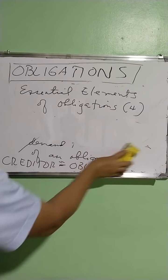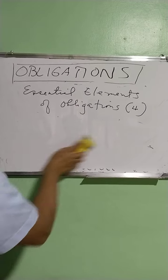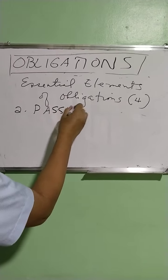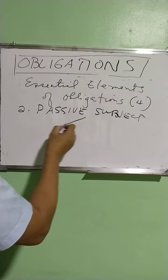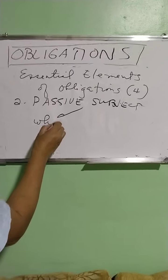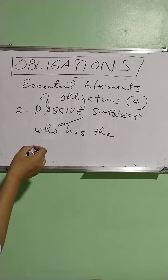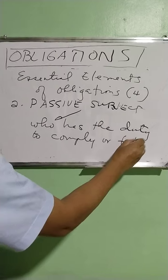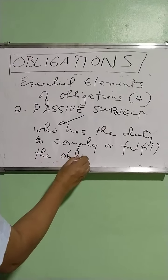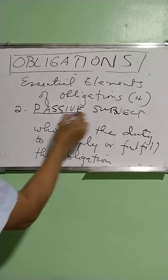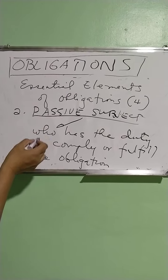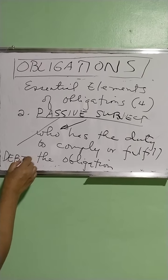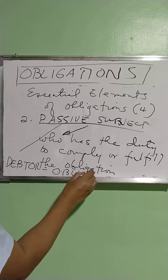The second essential element is the passive subject. The passive subject is the one who has the duty to comply with or fulfill the obligation that was constituted. This person is the debtor, whose other term is the obligor.